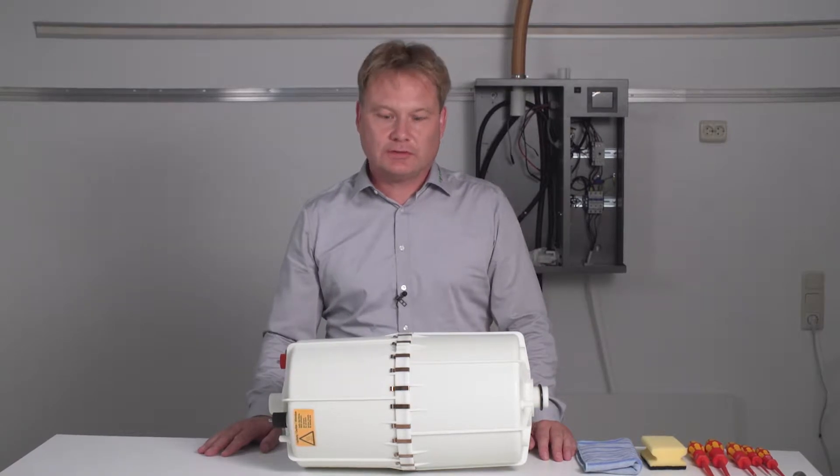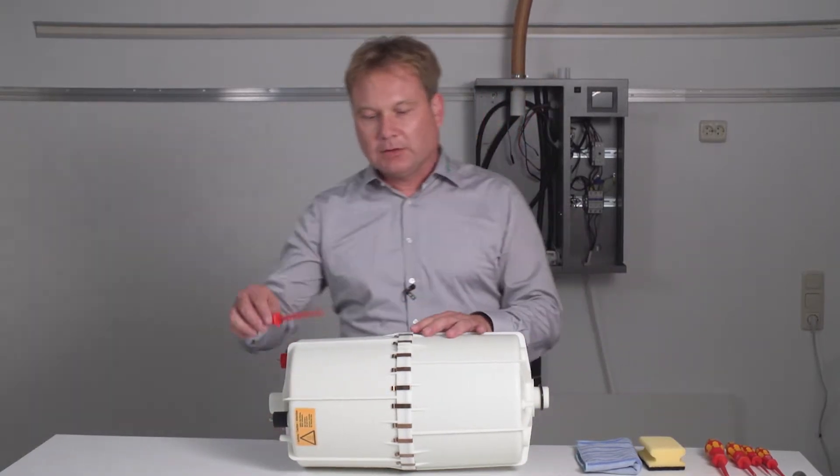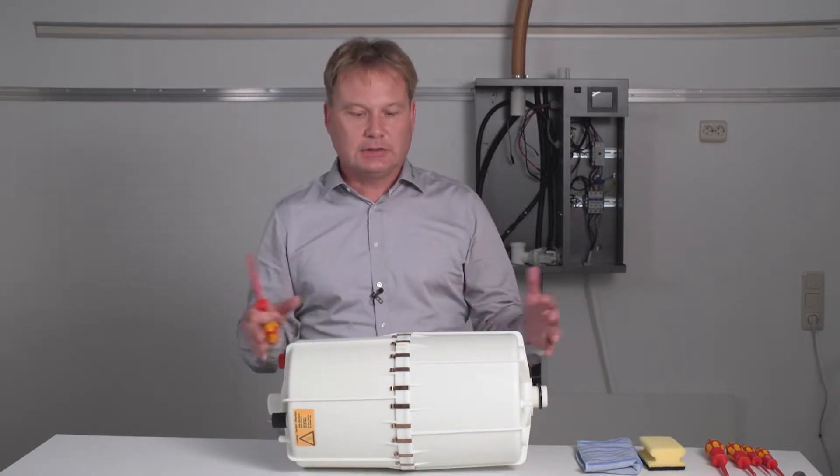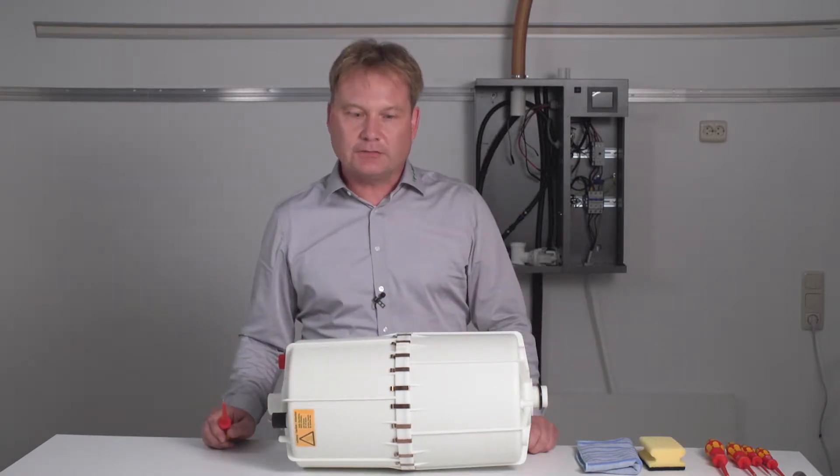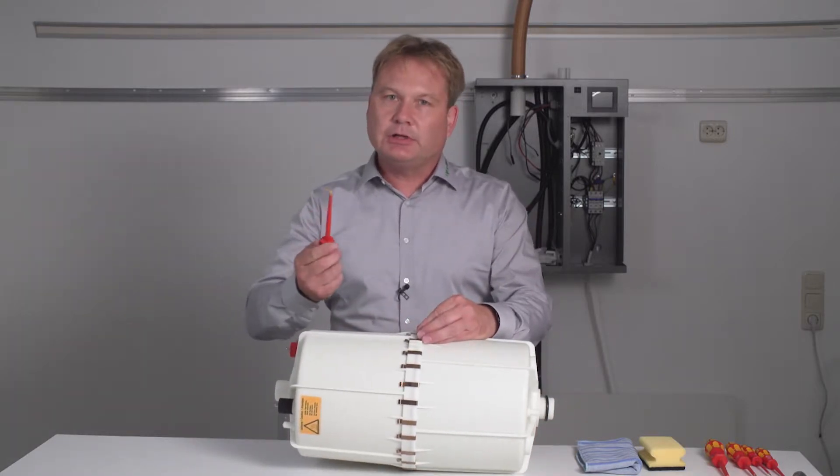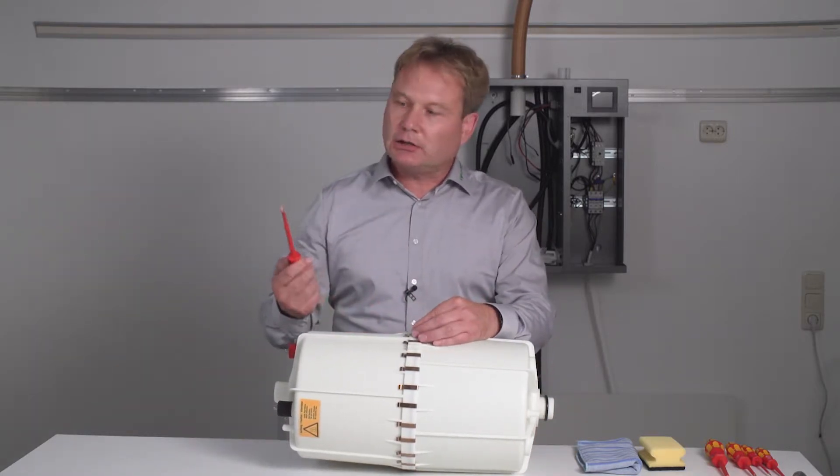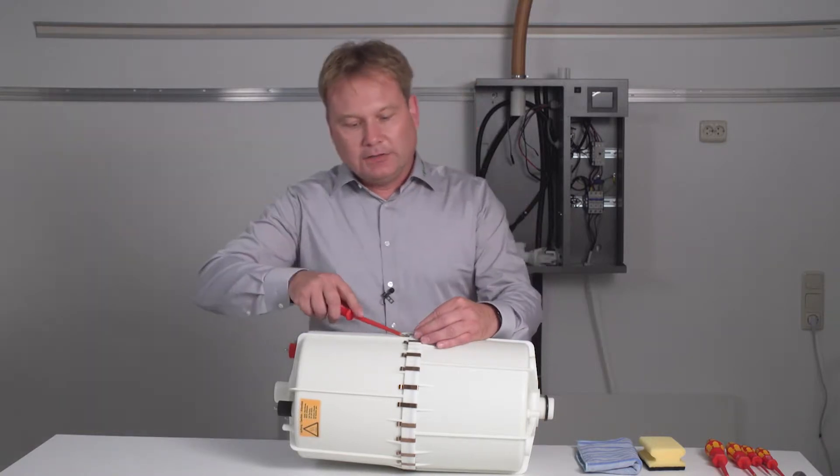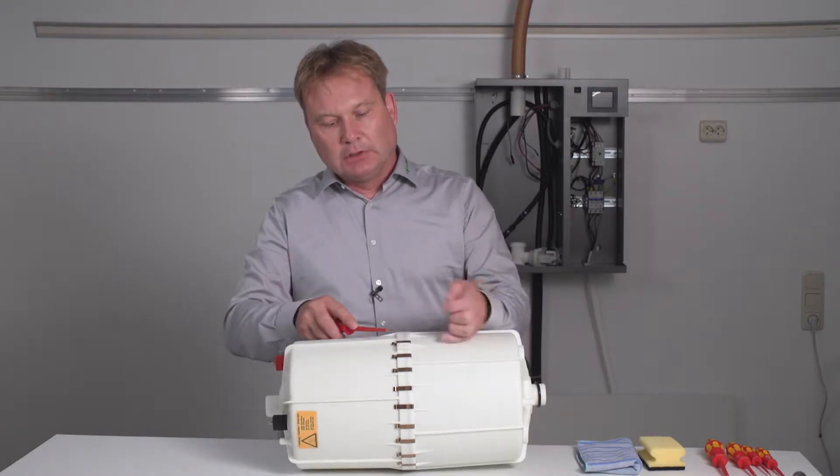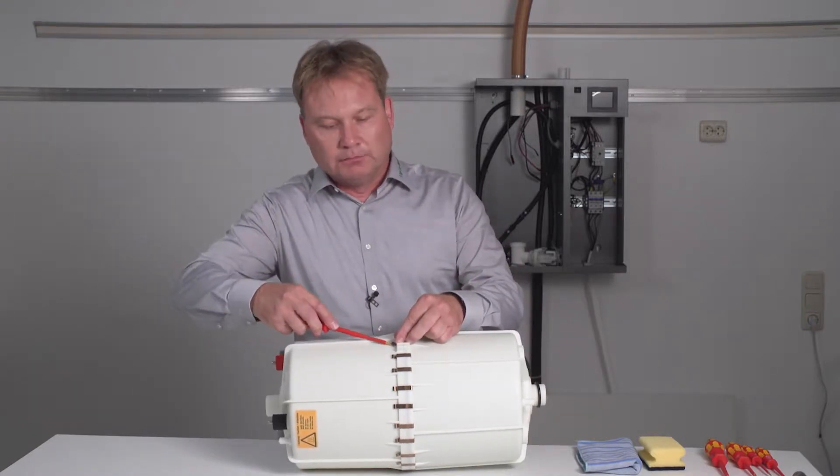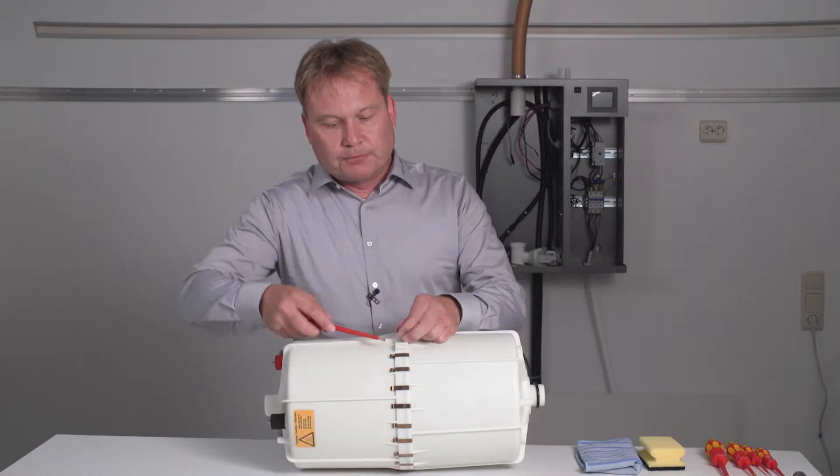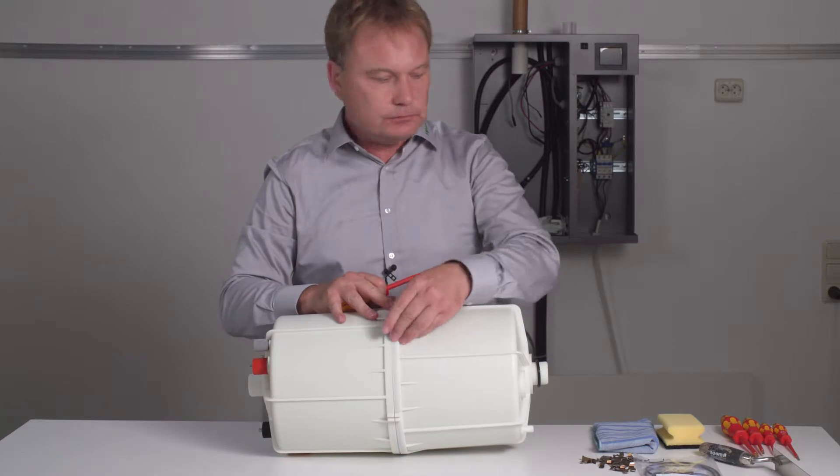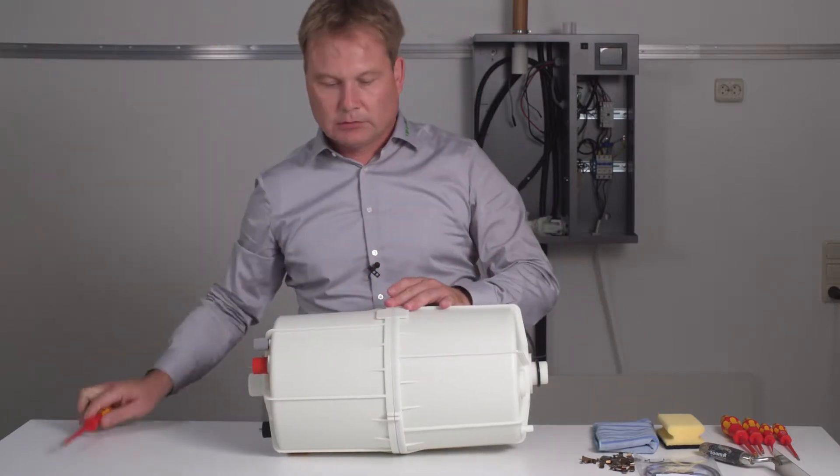Now I can begin with the maintenance of the steam cylinder. First, all of the clamps connecting the two cylinder halves will be removed. To do so, I leave it with a normal sized screwdriver behind the clamp and pop it out.